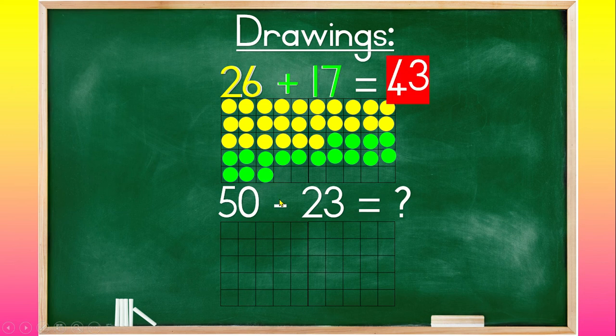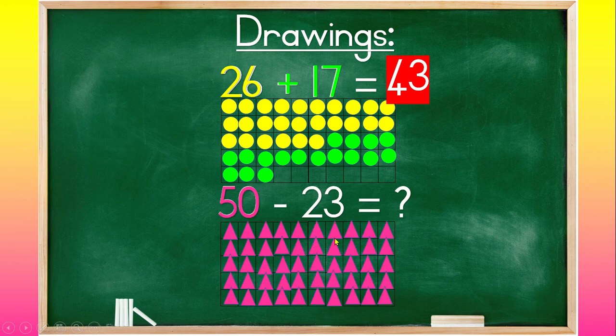Now we want to know what is 50 minus 23. So first I know I need 50 counters. Over here I have 50 triangles. I have to take away 23 of them. So let's start.